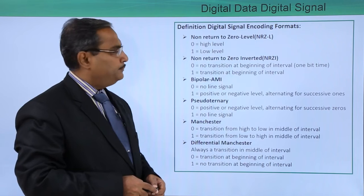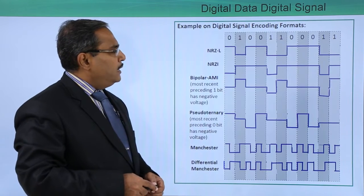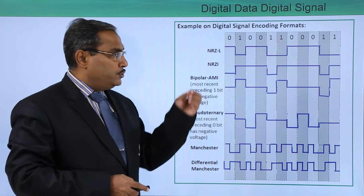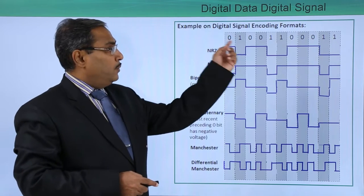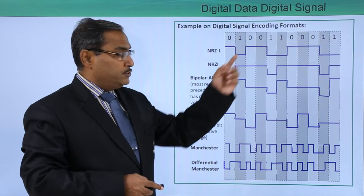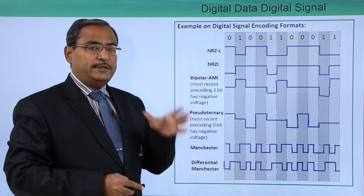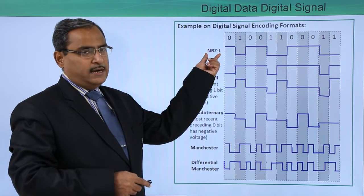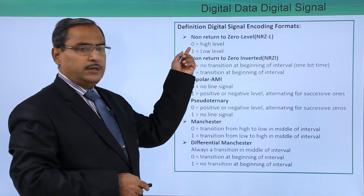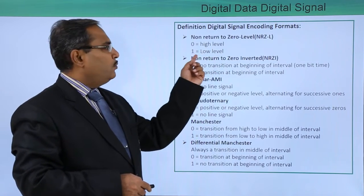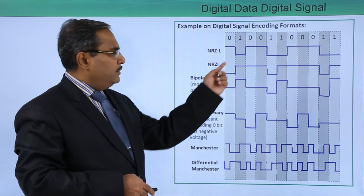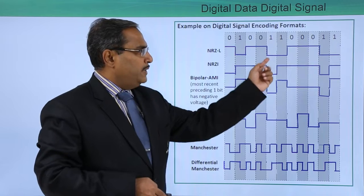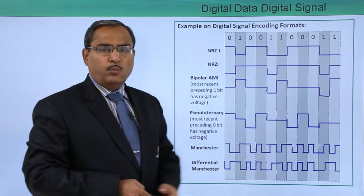Let us look at an example. Suppose we have digital data: 0 1 0 0 1 1 0 0 0 0 1 1. This is our digital data, and I want to encode it in the form of NRZ-L. The logic is: 0 means high level and 1 means low level. So 0 means high level, 1 means low, 0 means high, 1 means low, 0 means high, and 1 means low.